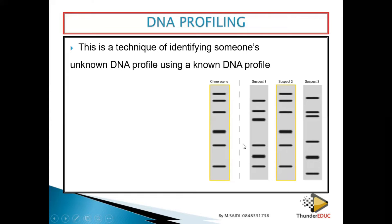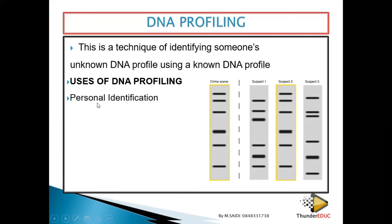What we collected from the crime scene and suspect two's DNA profile are exactly the same, therefore suspect two will be taken for accountability. What are some uses of DNA profiling? Number one: personal identification. If a person is missing, or someone has been burned somewhere, it is easy to identify that person using DNA profiling.